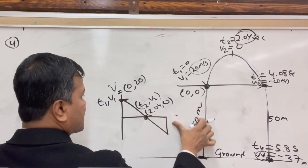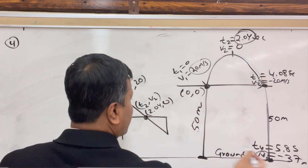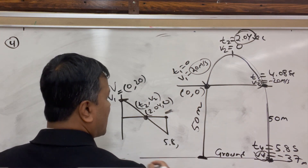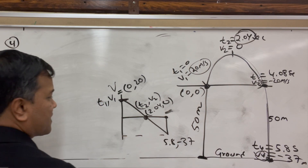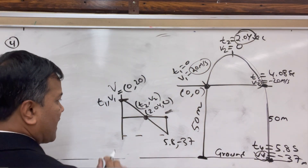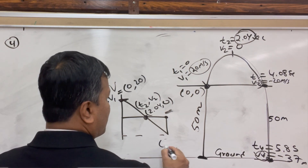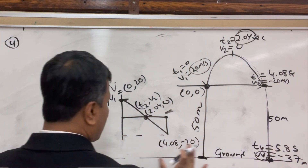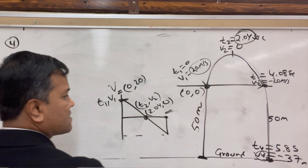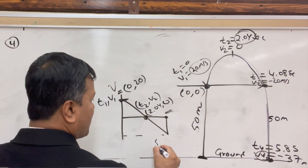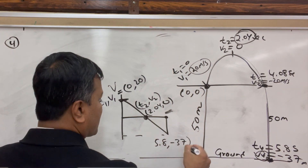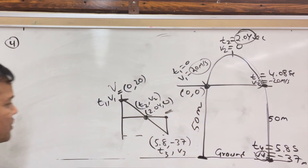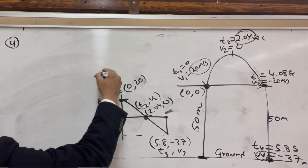This point is T4 = 5.8 s, V4 = −37 m/s. Also acceptable: writing T = 4.08 s, V = −20 m/s for point T3. I'll go with (5.8, −37). So these three points define the V-T graph, and that is the answer to question number 4.